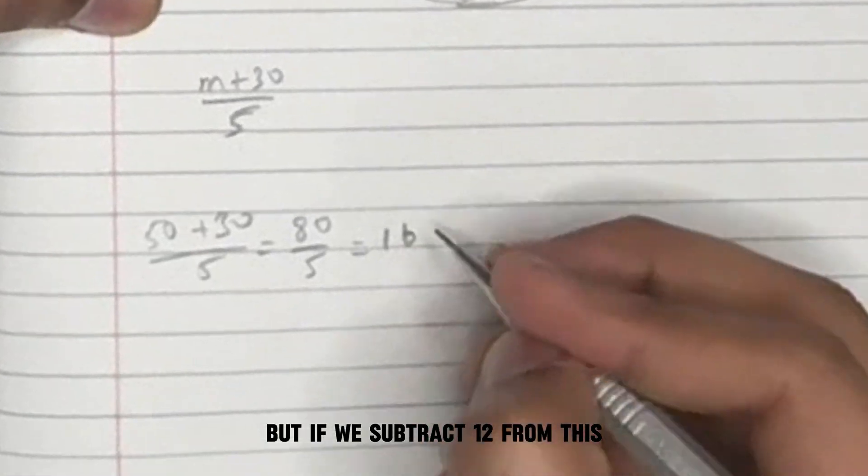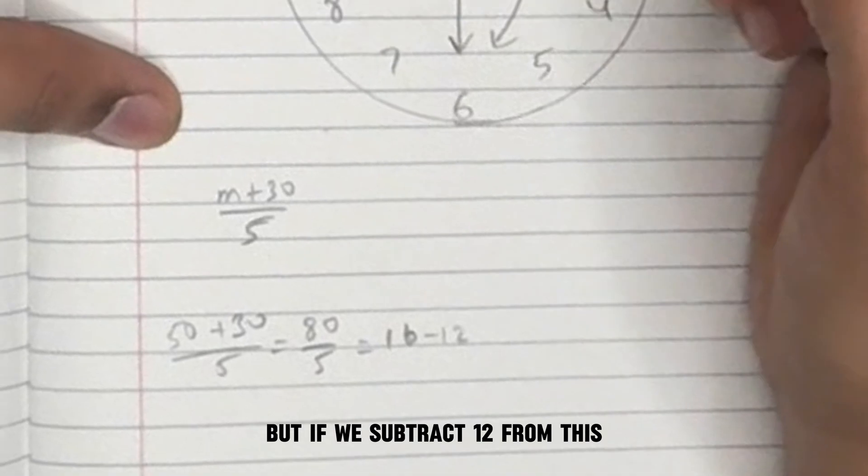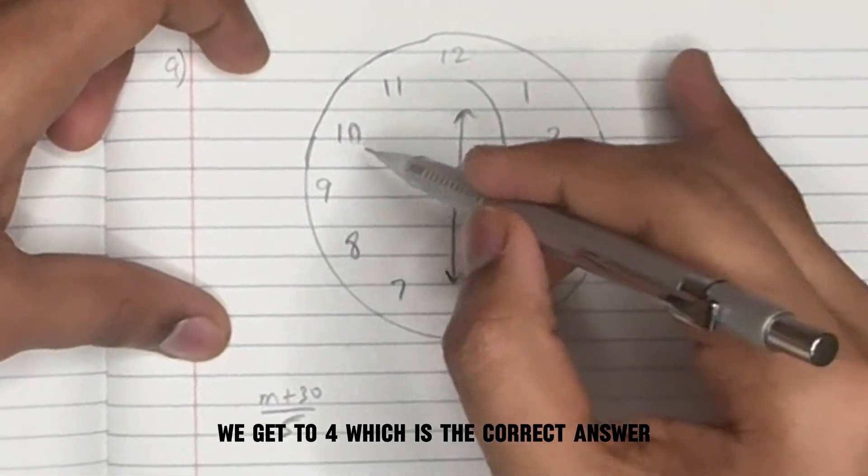But if we subtract 12 from this, we get to 4, which is the correct answer.